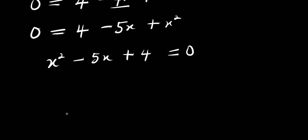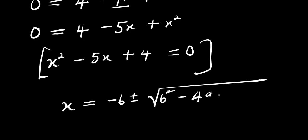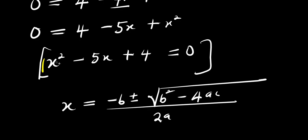So solving for the values of x, we make use of the quadratic formula: x equals negative b plus or minus square root of b squared minus 4ac, divided by 2a. From here, 1 is the coefficient of x squared — that is our a, negative 5 is my b, and 4 is my c.